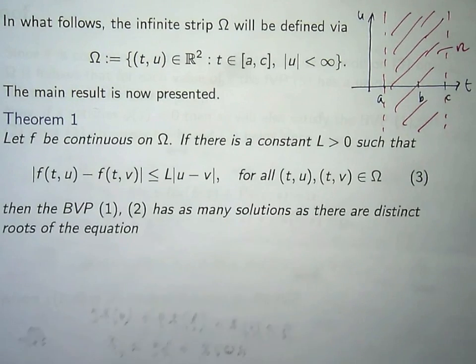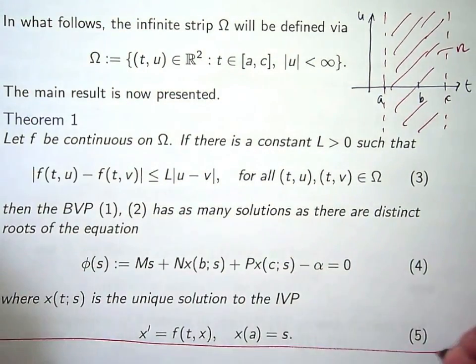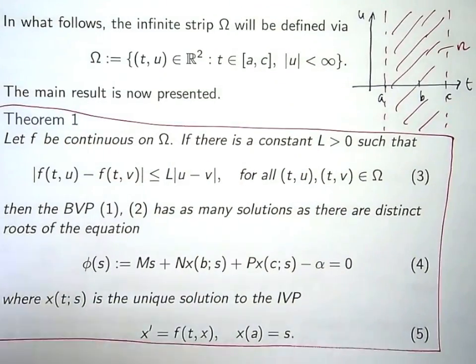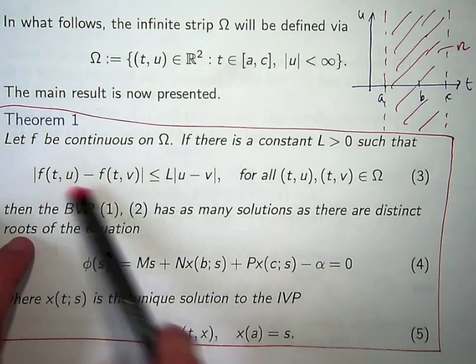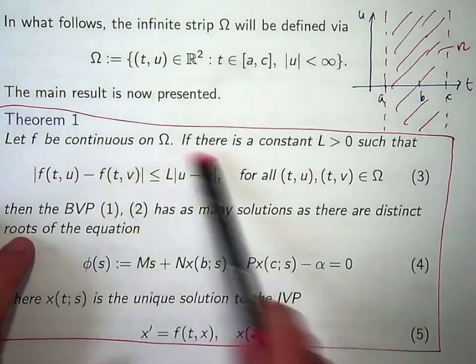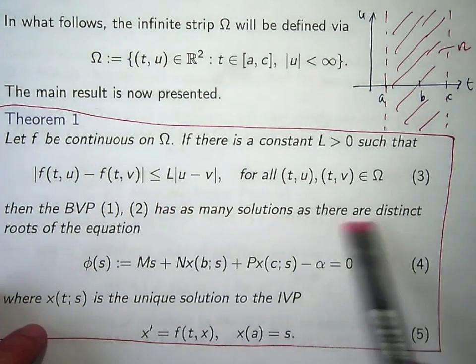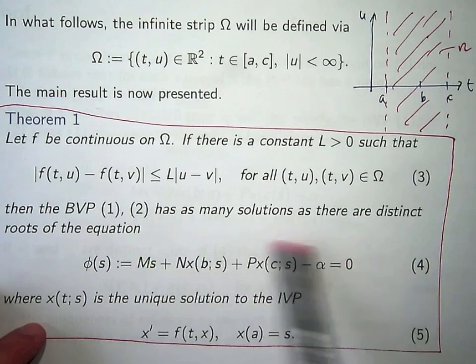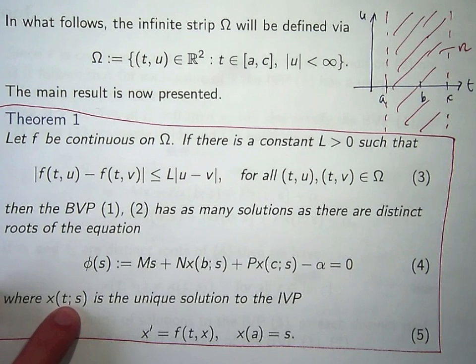Let's look at the main result. Let f be continuous on this infinite strip. If there's a positive constant L such that for all pairs of points in omega, f satisfies this condition 3, then the boundary value problem 1, 2, our original problem, has as many solutions as there are distinct roots of this equation here. Now, this x(t; s) is the unique solution to a corresponding initial value problem. You can see the differential equation is the same and then we've got this initial condition here, x(a) = s.